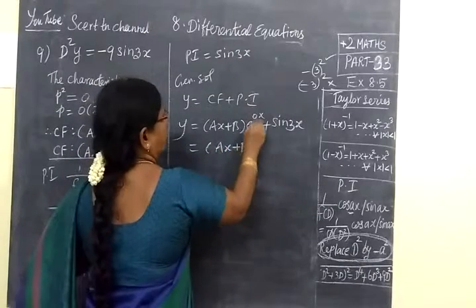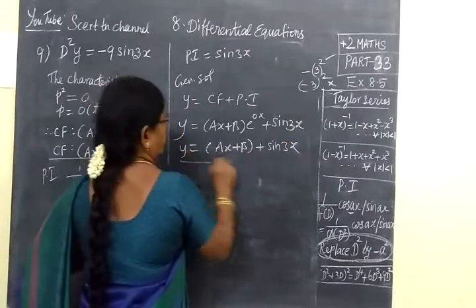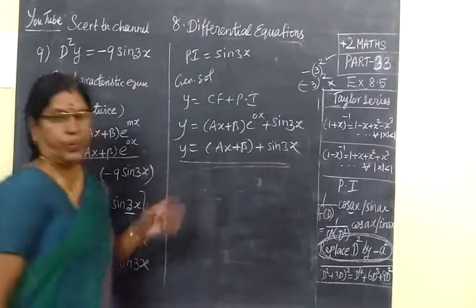So the final answer is y = (A + B) + (1/9)sin3x. It's a very simple answer. Check this one.